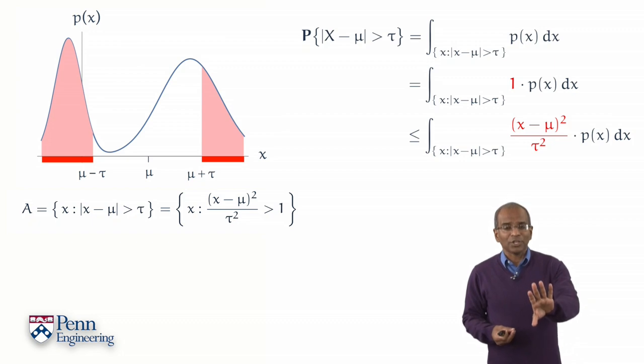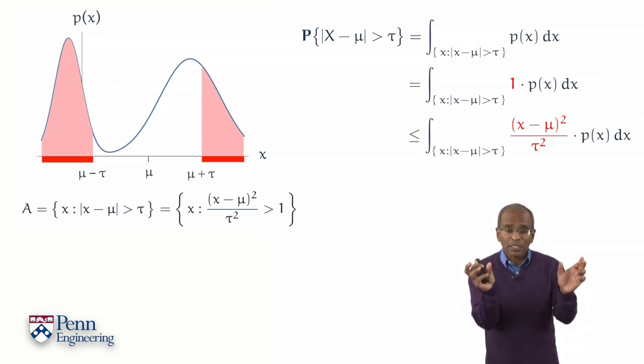We now have an integral of a square weighted according to a non-negative mass function. And this integral is over a region, a subset of the real line.